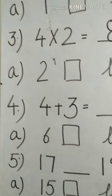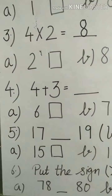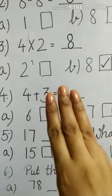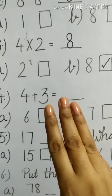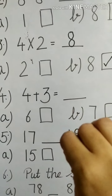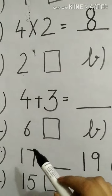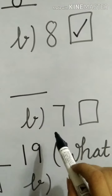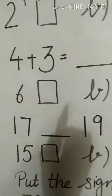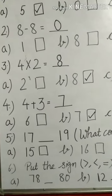Let's do the fourth question: 4 plus 3. This is simple addition. We will keep 4 in mind and count 3 fingers up — after 4 we count 5, 6, 7. So my correct answer is 7. In option A it is written 6, in option B it is written 7, and in option C it is written 8. My correct answer is 7, so I will be choosing option B.